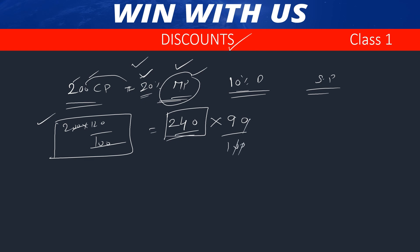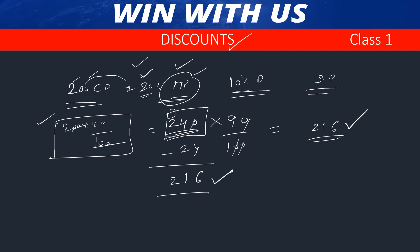240 into 90 by 100: 9 into 4 is 36, 9 into 2 is 18 plus 3 gives 21 — so the answer is 216 rupees. The market price is 240, and 240 minus 24 equals 216. So the selling price is 216 rupees.